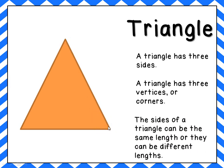Now the sides of a triangle — they can be the same length or they can be different lengths. As long as they have three sides and three vertices, it is a triangle.